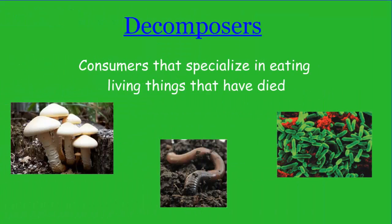The last type of consumer is decomposers and detritivores. For our purposes we're going to classify them all together as decomposers, even though there are some slight differences between those two words. Basically, they are consumers that specialize in eating living things that have died, such as mushrooms and other fungi, bacteria of all types, and organisms like the earthworm. Those are all specialized in breaking down living things that have died.